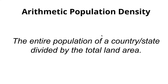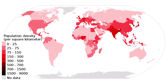Arithmetic population density is the entire population of a country divided by the total land area — the amount of people divided by square unit of land. Here on this map, the darkest areas are those with the highest arithmetic population density, and the lightest pink areas in the 0 to 25 range are the areas with the lowest arithmetic population density.